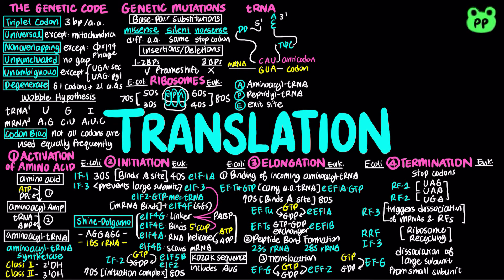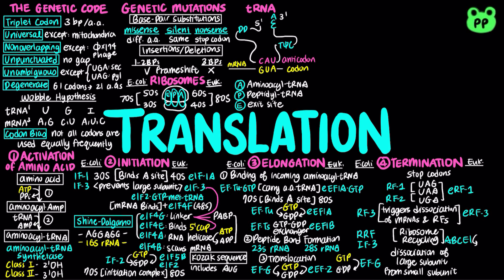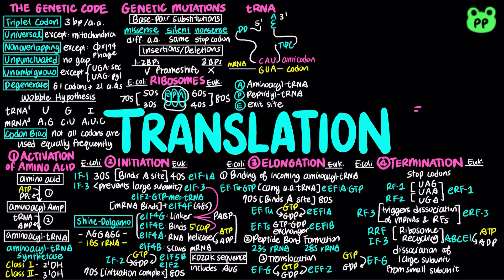In eukaryotic termination, a single release factor, eukaryotic release factor 1 (eRF1), recognizes all three stop codons and binds to the A site. Eukaryotic release factor 3 (eRF3) triggers the dissociation of mRNA, uncharged tRNA, and eukaryotic release factors 1 and 3. ATP-binding cassette E1 (ABCE1) serves as the ribosome recycling factor, facilitating the dissociation of the 60S subunit from the 40S subunit, accompanied by ATP hydrolysis.